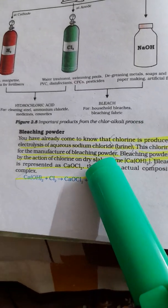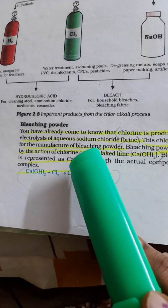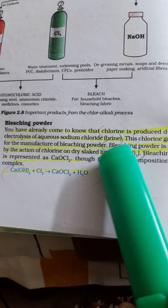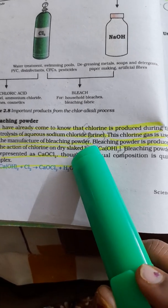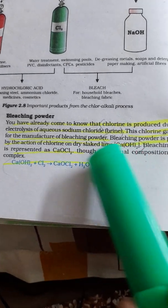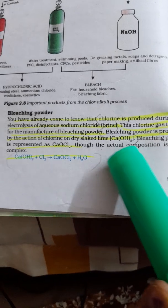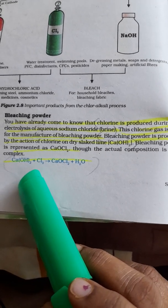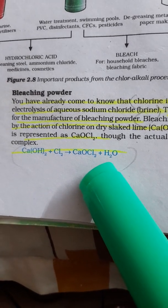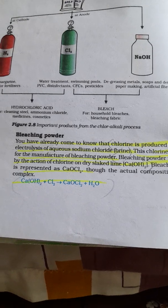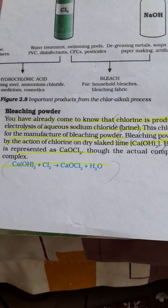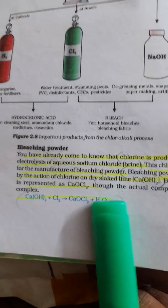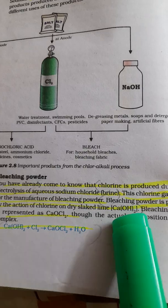Now we will see what is meant by bleaching powder — a very important chemical. Chlorine is produced during the electrolysis of aqueous sodium chloride, which is called brine. Chlorine gas is used for the manufacture of bleaching powder. Bleaching powder is produced by the action of chlorine on dry slaked lime, which is calcium hydroxide Ca(OH)₂. Bleaching powder is represented as CaOCl₂. Remember the formula: CaOCl₂ is the formula for bleaching powder, and slaked lime is Ca(OH)₂.